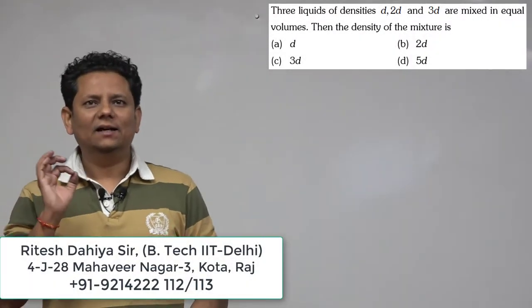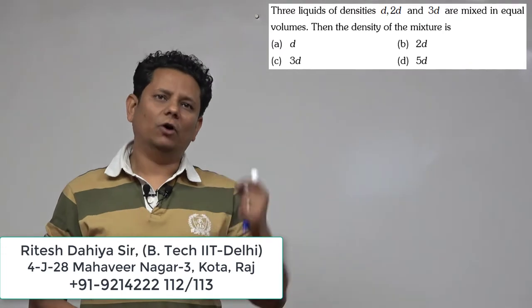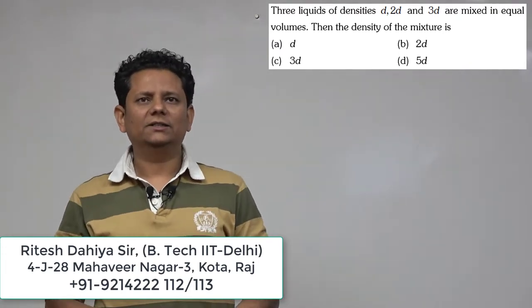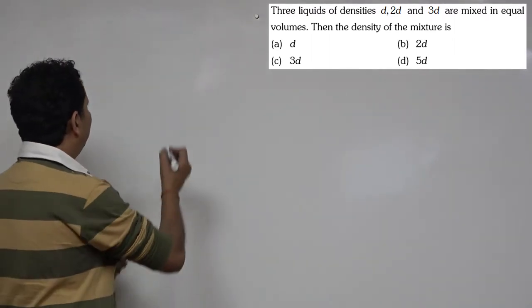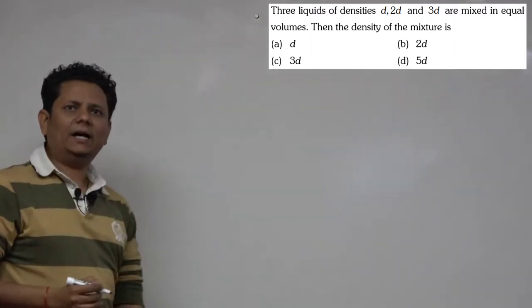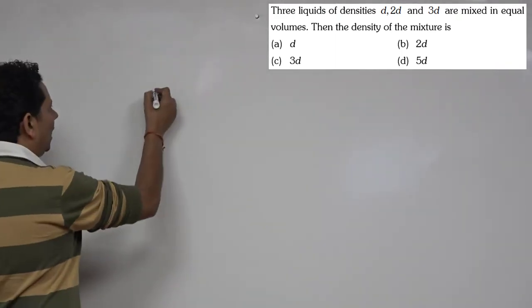Next question: Three liquids of density d, 2d, and 3d are mixed in equal volumes. Then the density of the mixture will be? Now, we are given that we have three different liquids with densities d, 2d, and 3d.